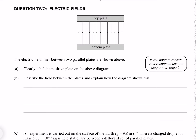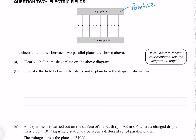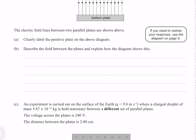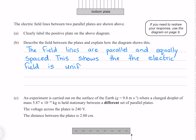Question 2. The electric field lines between two parallel plates are shown above. Clearly label the positive plate on the above diagram. The definition of field lines is that they always point from positive towards negative, which means our positive plate is the top one. Describe the field between the plates and explain how the diagram shows this. The field lines are parallel and equally spaced, showing that the electric field is uniform between the plates.